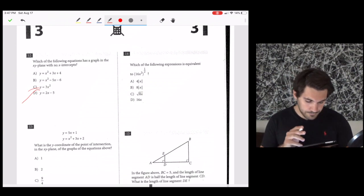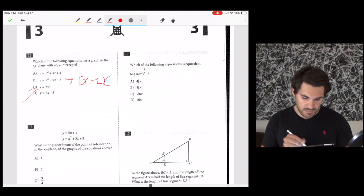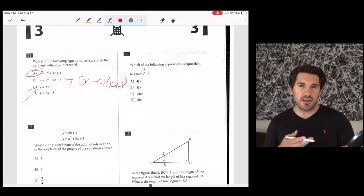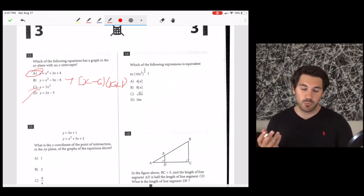B is a pretty common equation that's factorable. B factors into x minus 6 times x plus 1. This has x-intercepts. So by definition, it has to be A. It kind of makes sense because A is unfactorable. And if you try plugging it into the quadratic equation, that won't work either.